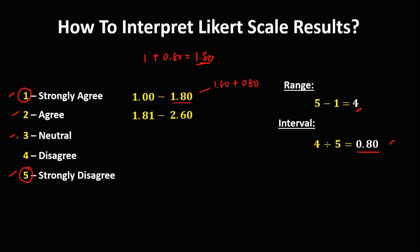Then for the third scale, since this one is 2.60, the lower limit is 2.61. And for the upper limit, 2.60 plus 0.80 equals 3.40. Then for the fourth scale, since this one is 3.40, the lower limit is 3.41. And the upper limit, 3.40 plus 0.80 equals 4.20.